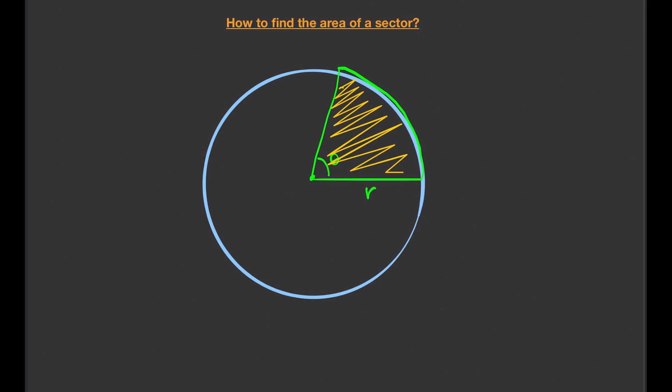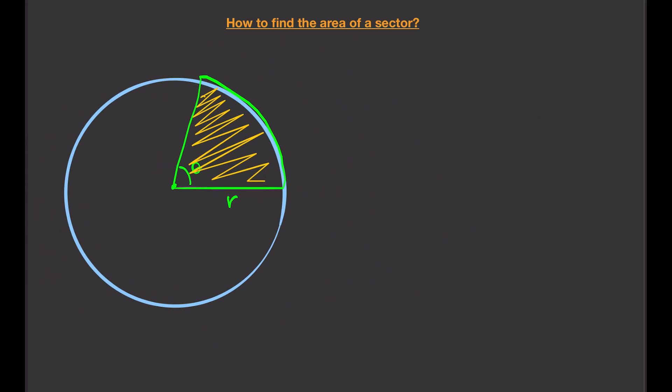So how do we find the area of a sector? There is a formula for that. The formula is: Area = (1/2) r² θ, where θ is the angle in radians.